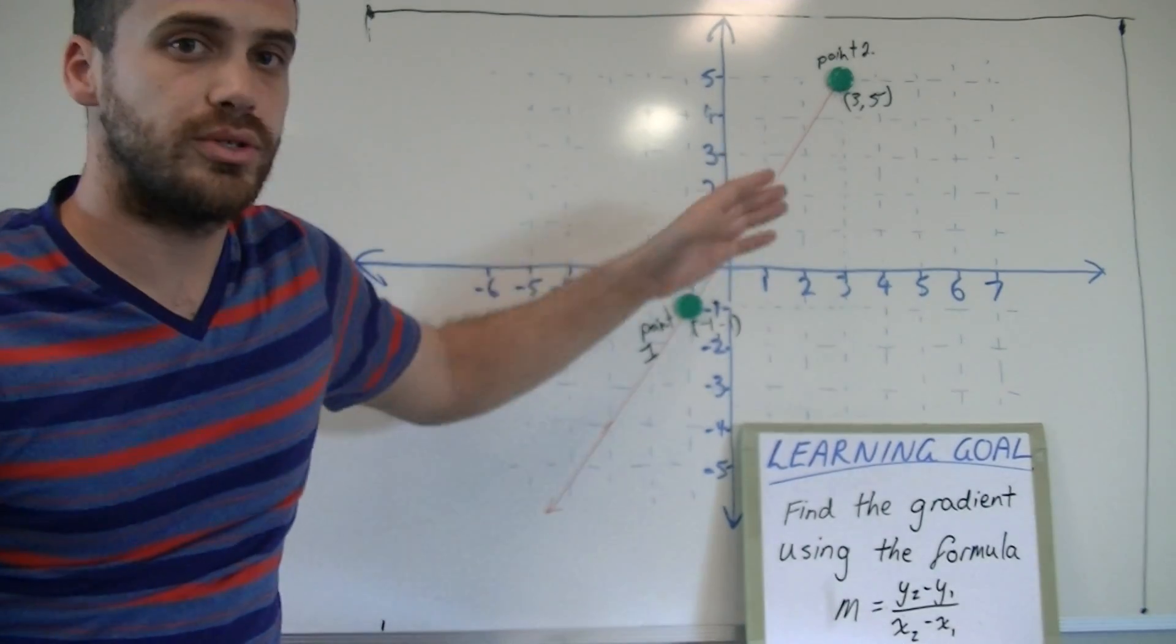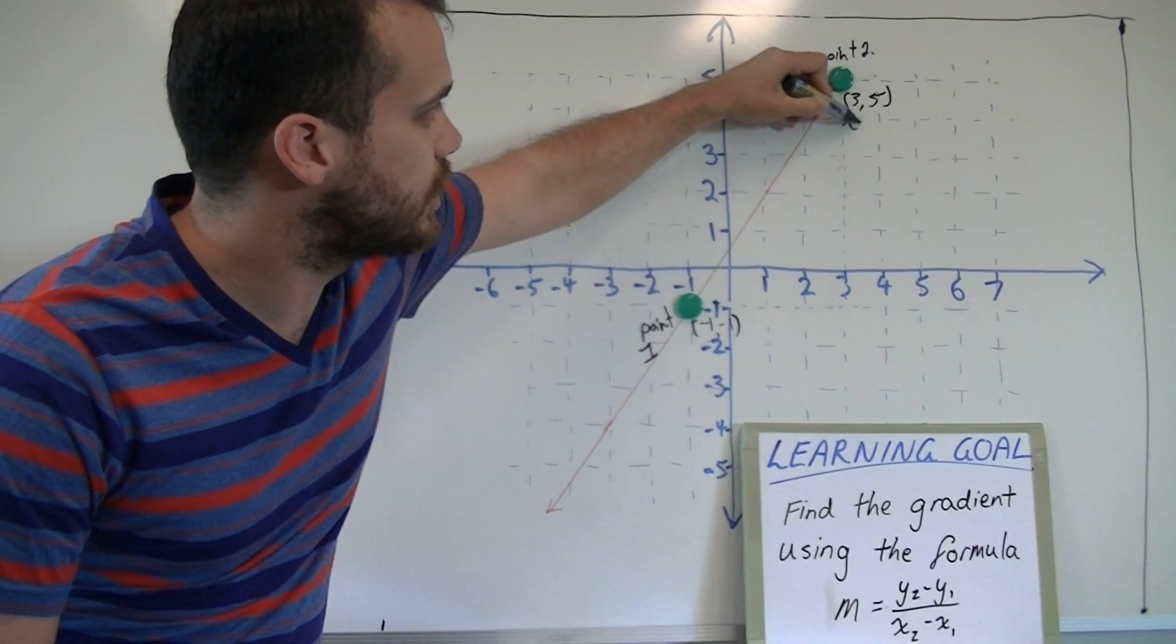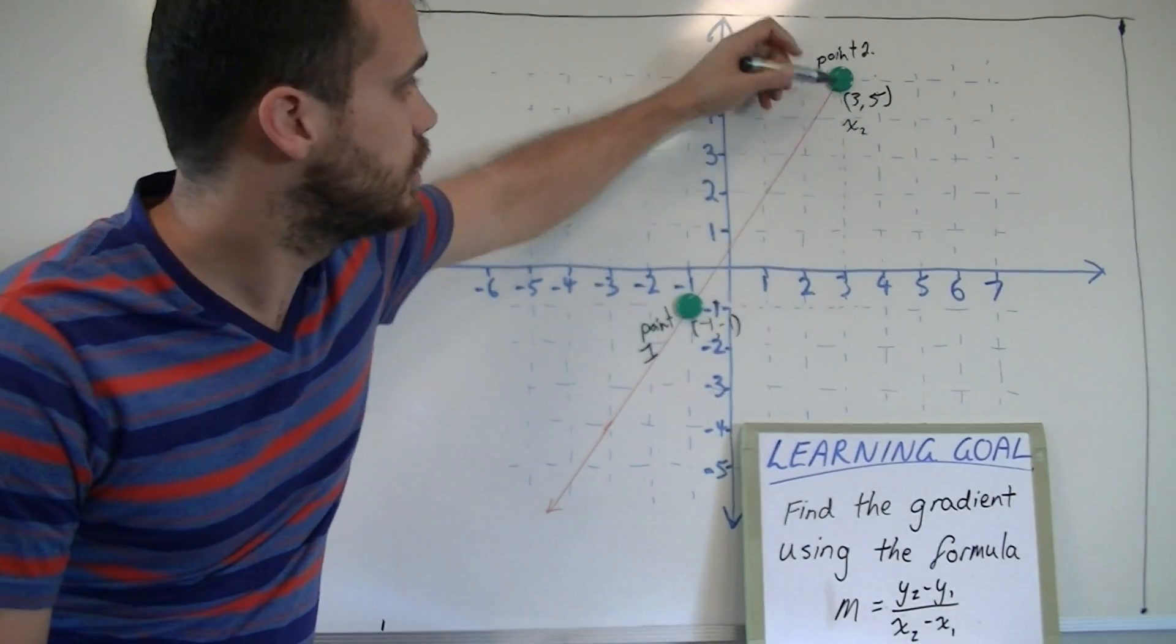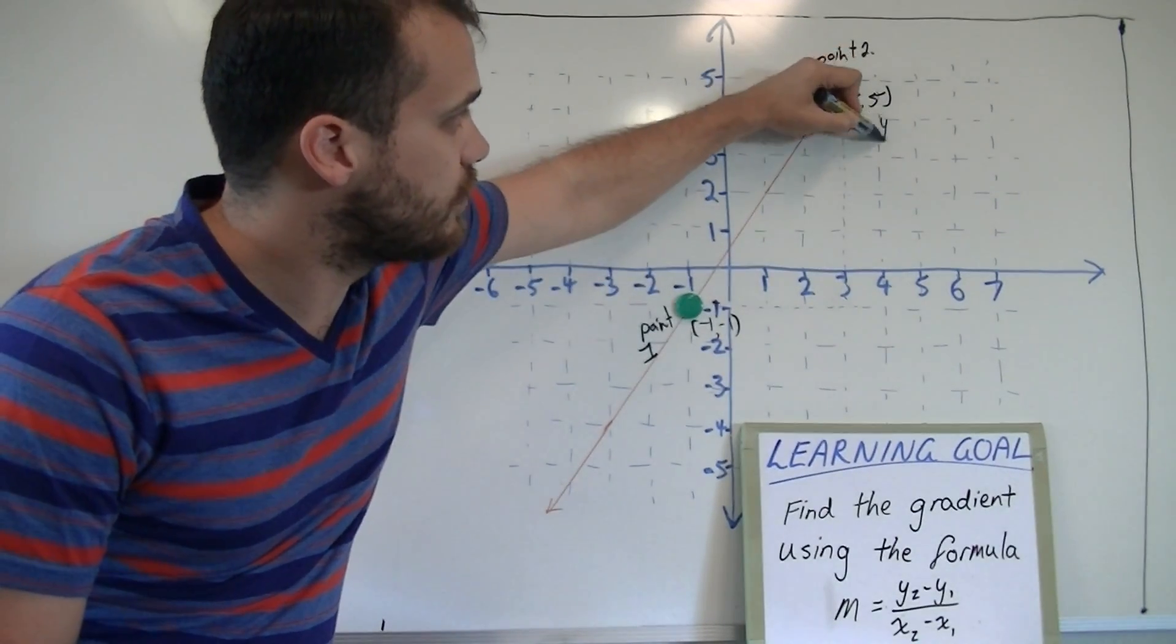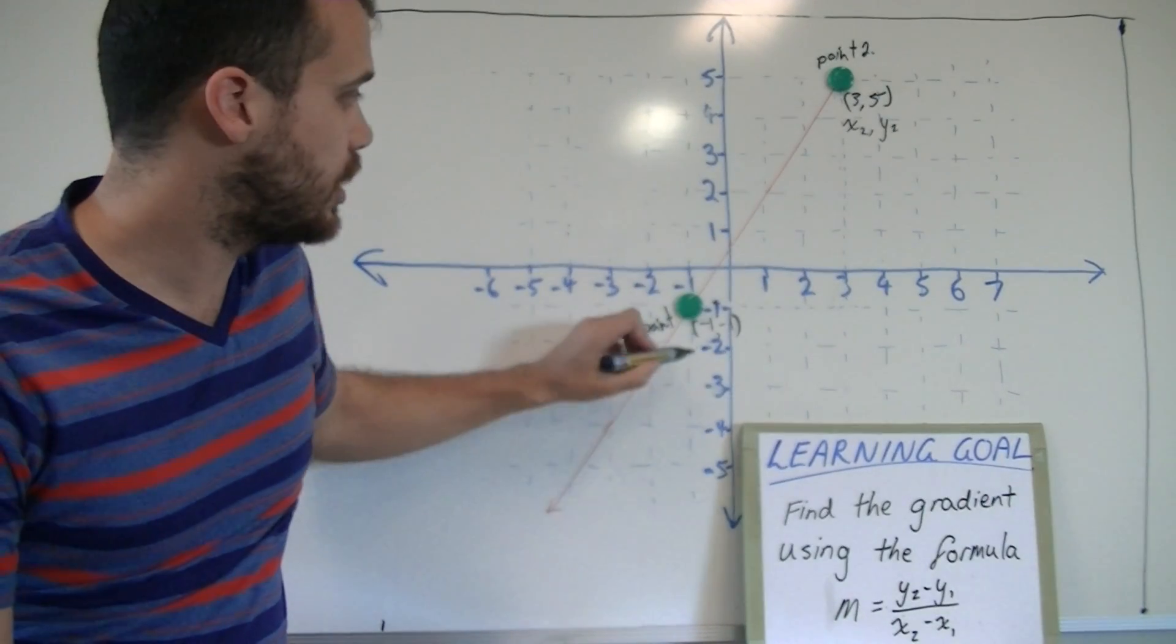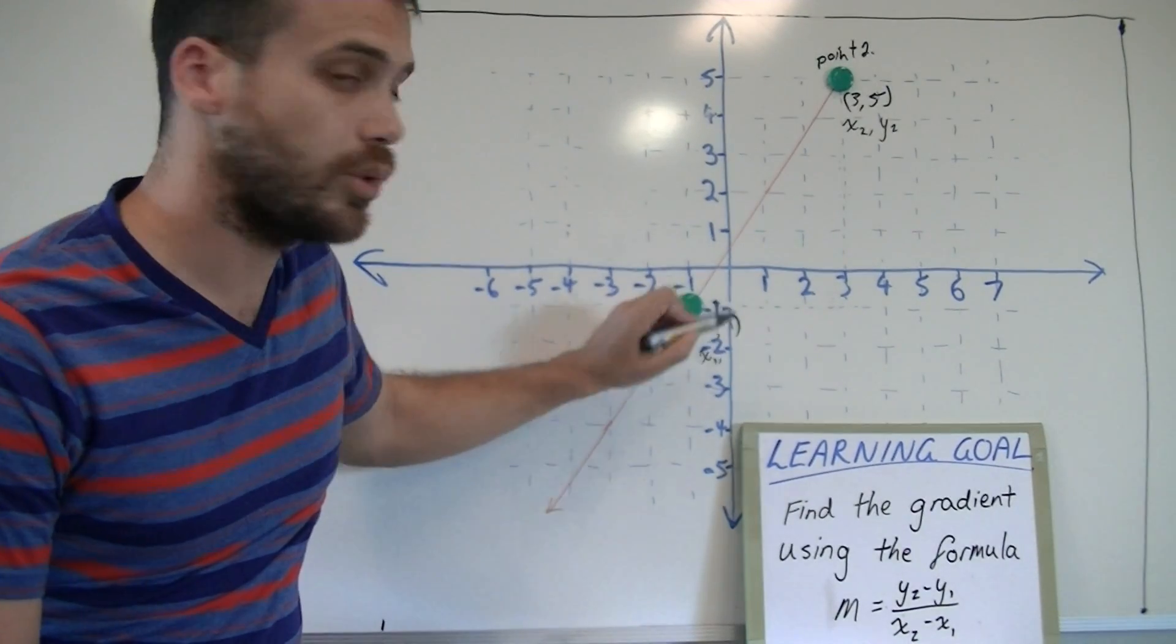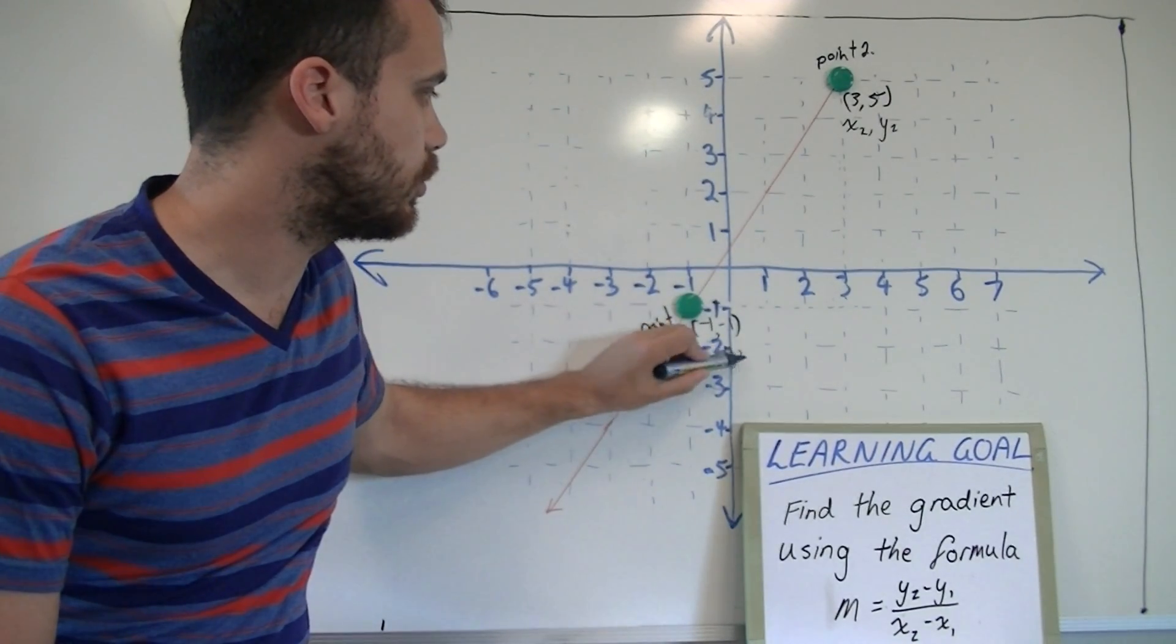In point 2, you have your x value, which we can call x2, and you have your y value, which we can call y2. And in point 1, you have your x value, which we can call x1, and you have your y value, which we can call y1.